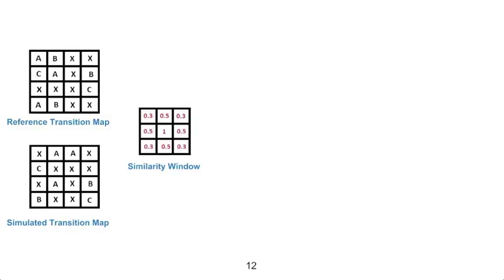This is the similarity window, which for our example is of size 3 by 3 and uses exponential decay. The center square will always have a value of 1. The squares directly above and below and to the side of the center square have a value of 0.5, and the corner squares have a value of 0.3. These values are lower because these squares are further away from the center of the similarity window.